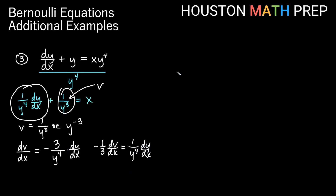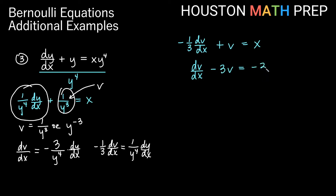Substituting in, we get negative one-third dv/dx plus v equals x. This is linear but not in normal form because of the negative one-third, so we multiply everything by negative 3: dv/dx minus 3v equals negative 3x. Now we find the integrating factor: e to the integral of negative 3 dx, which gives e to the negative 3x. So our integrating factor is e to the negative 3x, and we multiply the entire equation by it.